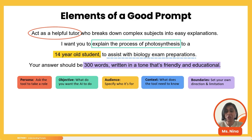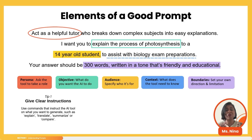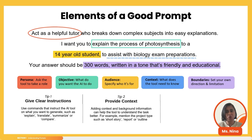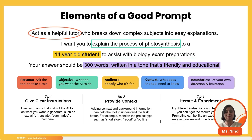Here are some top tips when creating your own prompts. Give very clear instructions — the clearer the instructions, the more the prompt will work for you. Use words such as 'explain,' 'translate,' 'summarize,' or 'compare.' Always provide context — the more background information you can give, the better the result. You can give it a project type such as a short story, report, or outline. And reiterate and experiment — you may require several rounds of reiteration until you start getting the answers you want. It is a skill you need to continue developing.